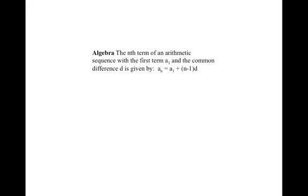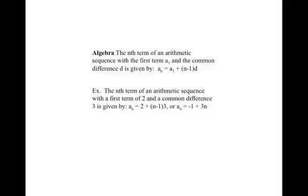Let's consider the algebra for the rule for an arithmetic sequence. The nth term of an arithmetic sequence with first term A1 and common difference D is given by: A_N equals A1 plus (N minus 1) times D. For example, the nth term of an arithmetic sequence with first term 2 and common difference 3 is given by...